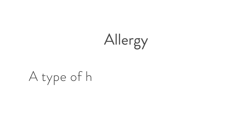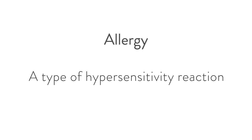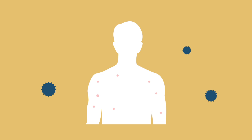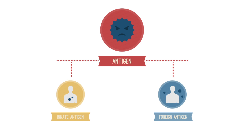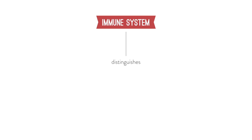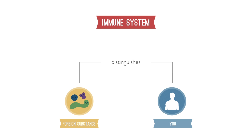An allergy is a type of hypersensitivity reaction. A hypersensitivity reaction is when your body reacts to something that is benign or not necessarily harmful to you in a not-so-helpful way — we call this a pathologic process. These antigens can either be from within you or from the external environment. Our immune system needs some way to distinguish what's foreign and what's us, and remember, this is there to protect you.